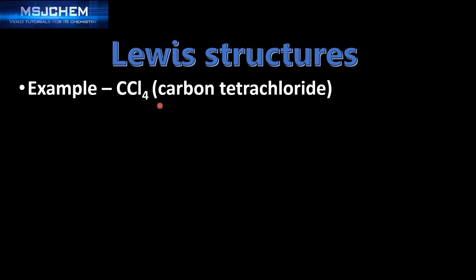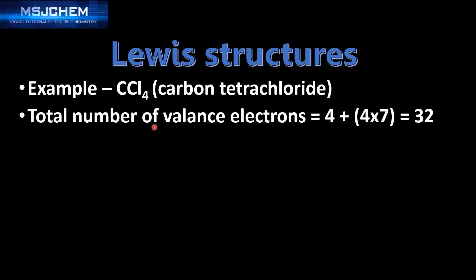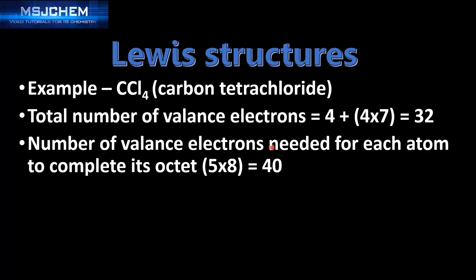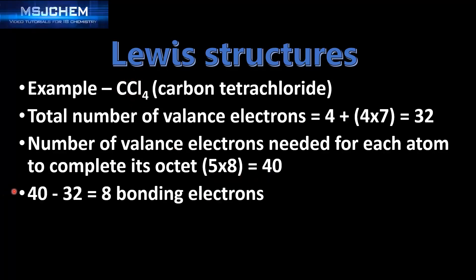The example is CCl4, which is carbon tetrachloride. The total number of valence electrons is 4 for carbon, and each chlorine has 7 with 4 chlorines, so it's 4 plus 4 times 7 equals 32. Next, the number of valence electrons needed for each atom to complete its octet: carbon and chlorine both need 8, there are 5 atoms total, so 5 times 8 equals 40. Subtracting 32 from 40 gives us 8 bonding electrons in the molecule.